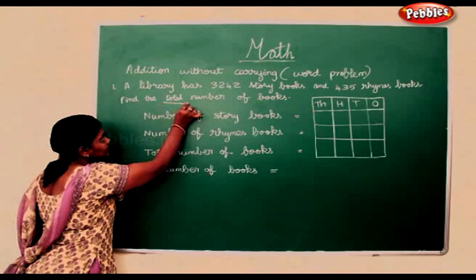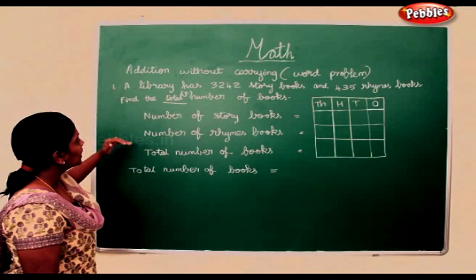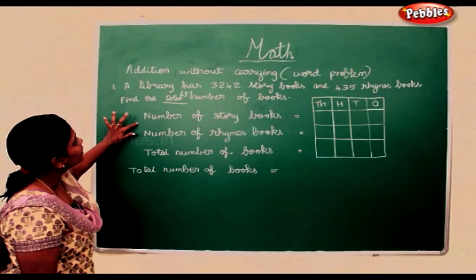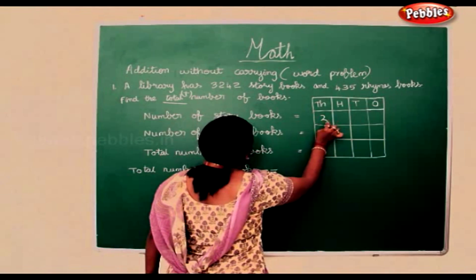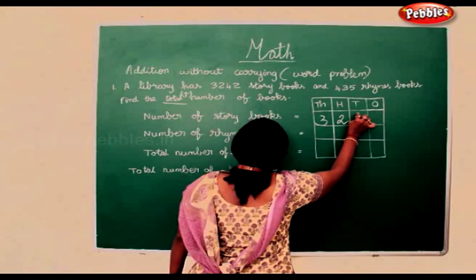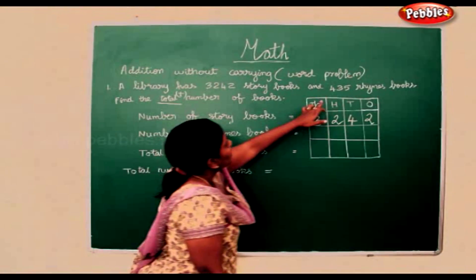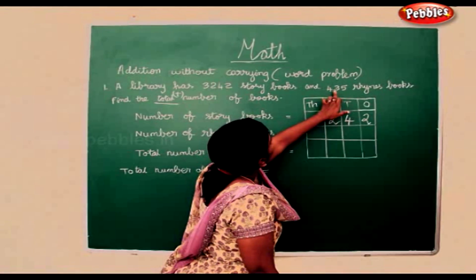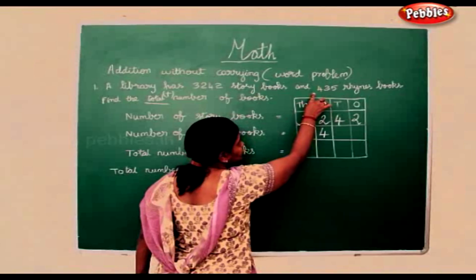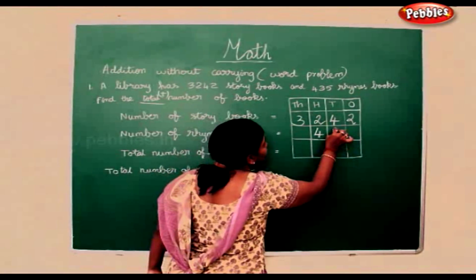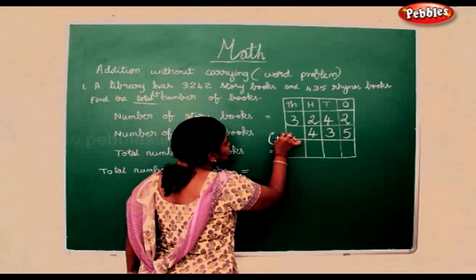If a total is given, we will use addition. We will always add the number of books. The number of story books is 3,242, and the rhyme books is 435. There are no thousands in 435. Now I am putting the add symbol.